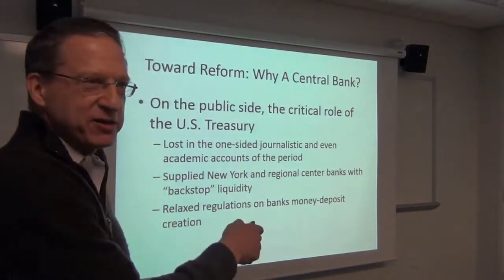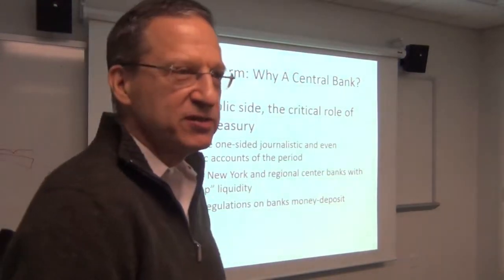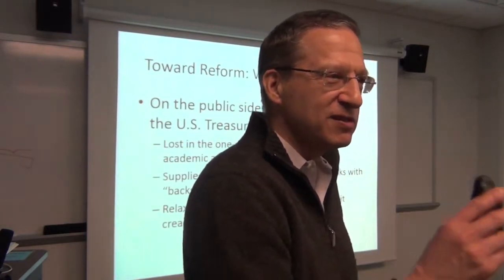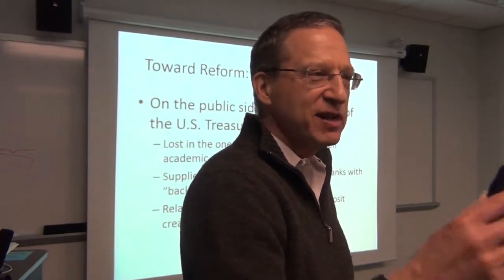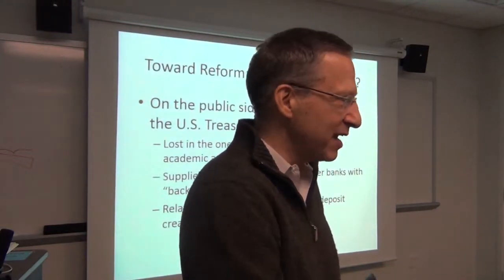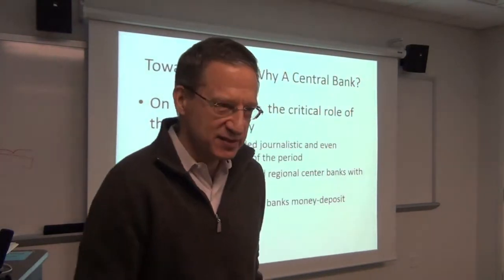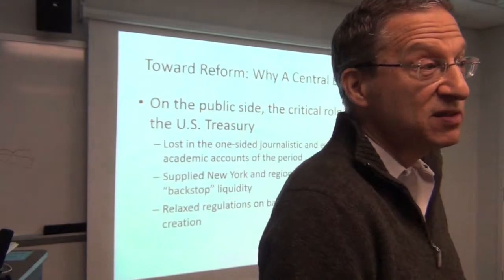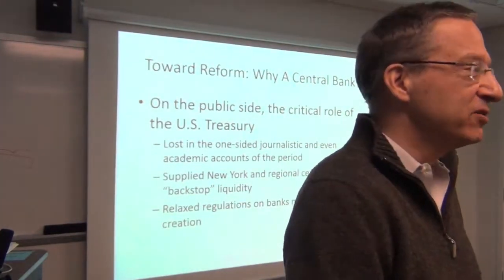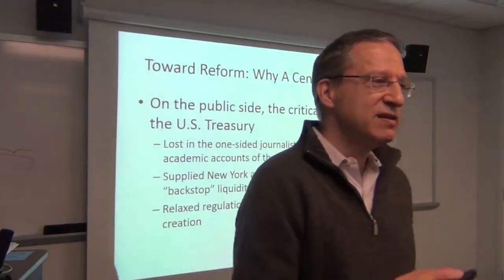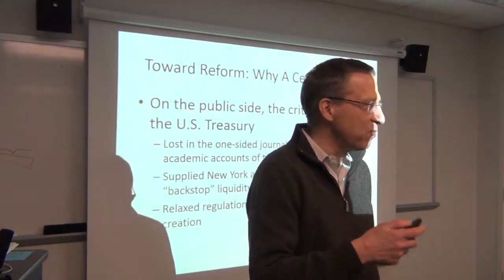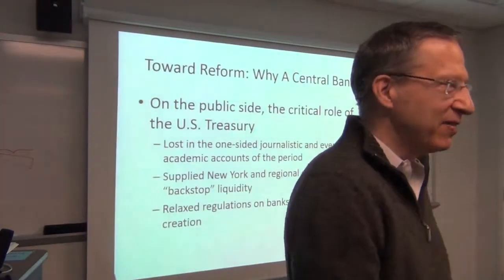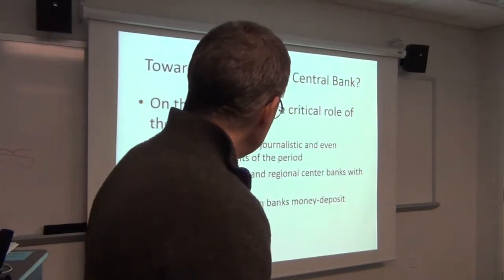They also relax regulations on banks — for example, all that money creation, especially small denomination currency, was completely illegal. But the Treasury understood that enforcing the law would actually reinforce the contraction. So it's like regulatory forbearance. The same was true in 2008: probably virtually every bank was insolvent, and if the Fed, the Treasury, the Office of the Comptroller of the Currency, and state banking departments had really wanted to, they could have closed down the entire banking system. But they chose not to — the goal was to try to restore the solvency of the banking system.